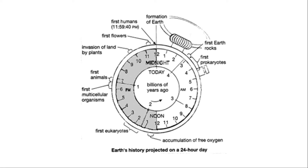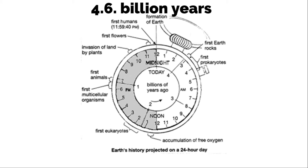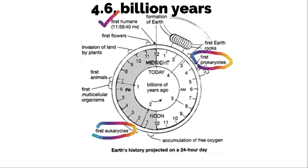This figure is Earth's history projected on a 24-hour day. The age of the Earth is around 4.6 billion years. The first inhabitants of the Earth are the prokaryotes, about 3.5 to 3.8 billion years ago. Prokaryotes are single-celled organisms without nuclei, while eukaryotes are characterized by cells with nuclei. The oldest evidence of eukaryotes is from 2.7 billion years ago. If you notice, the first two-thirds of the Earth's history, the planet was inhabited by only single-celled organisms. Humans appear during the last few seconds of the last minute of the 24-hour clock.